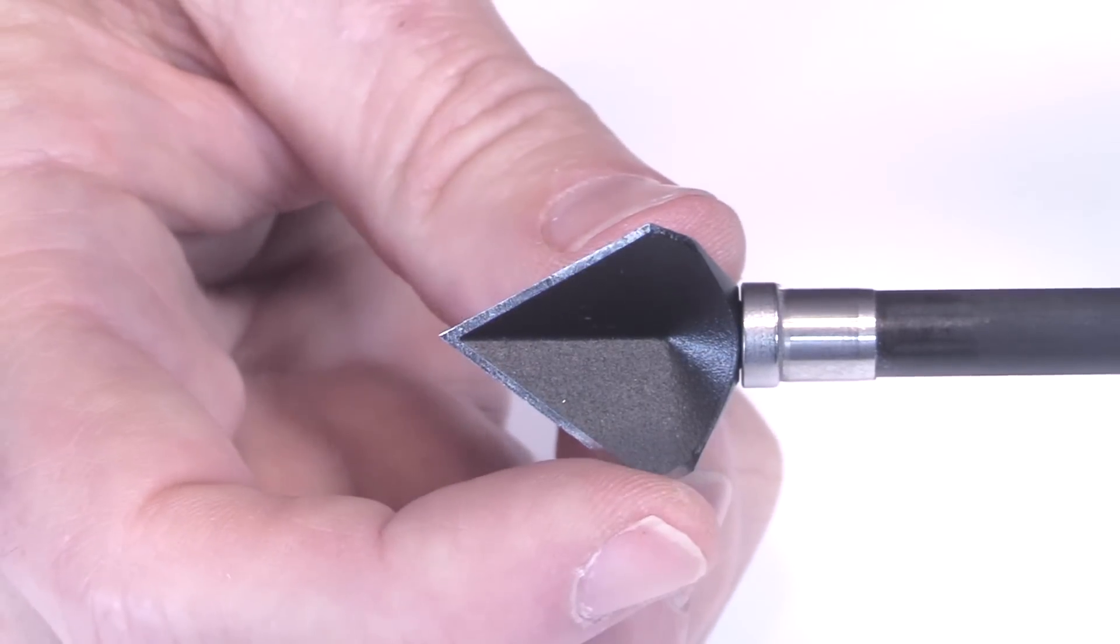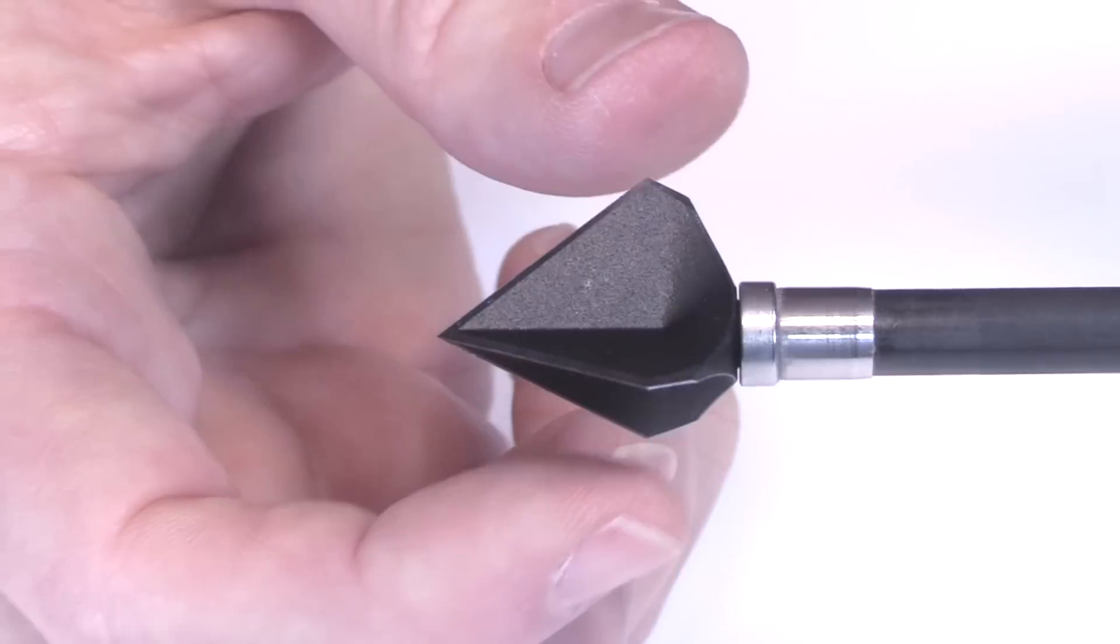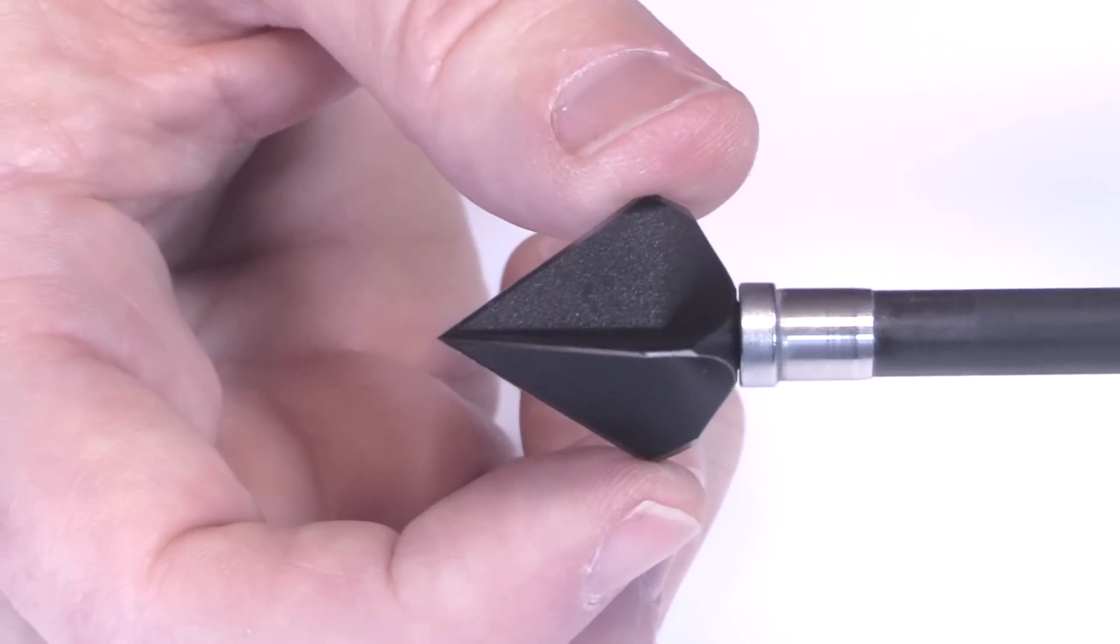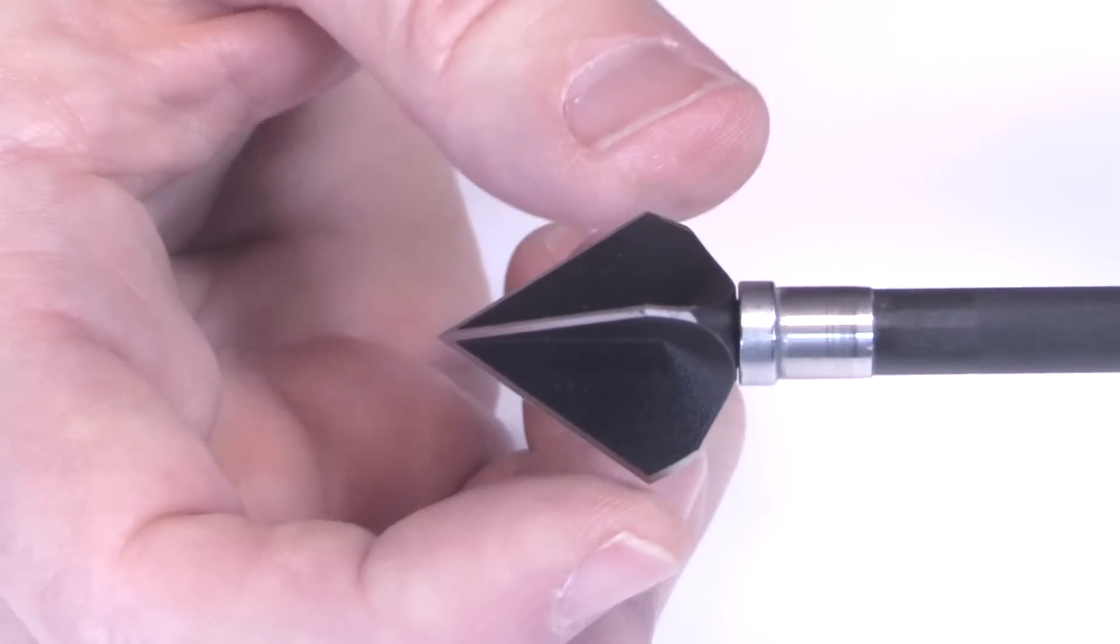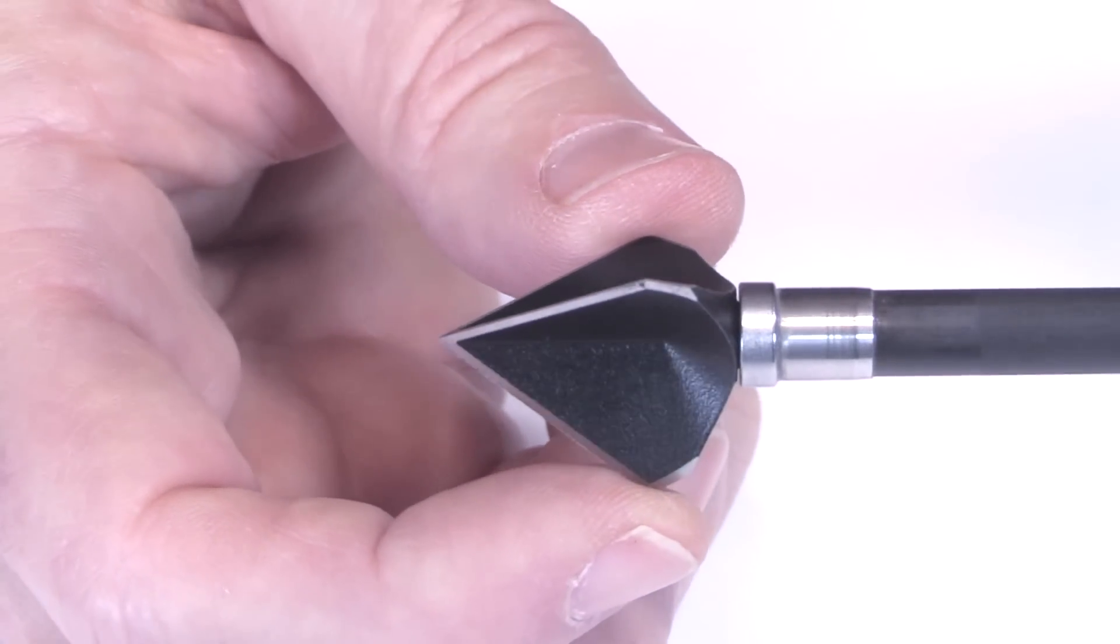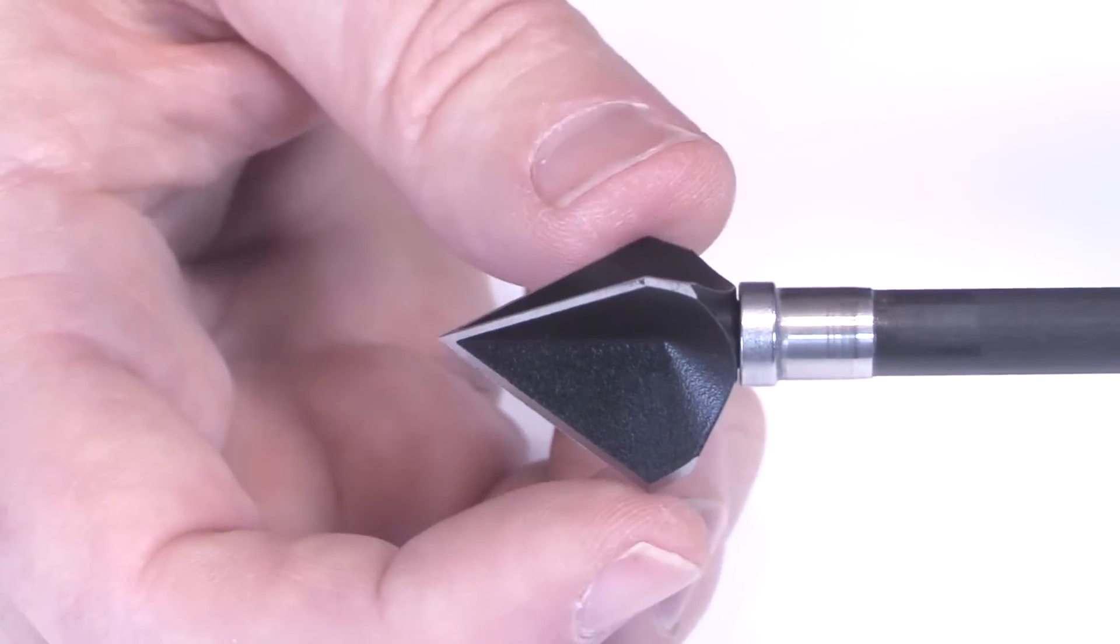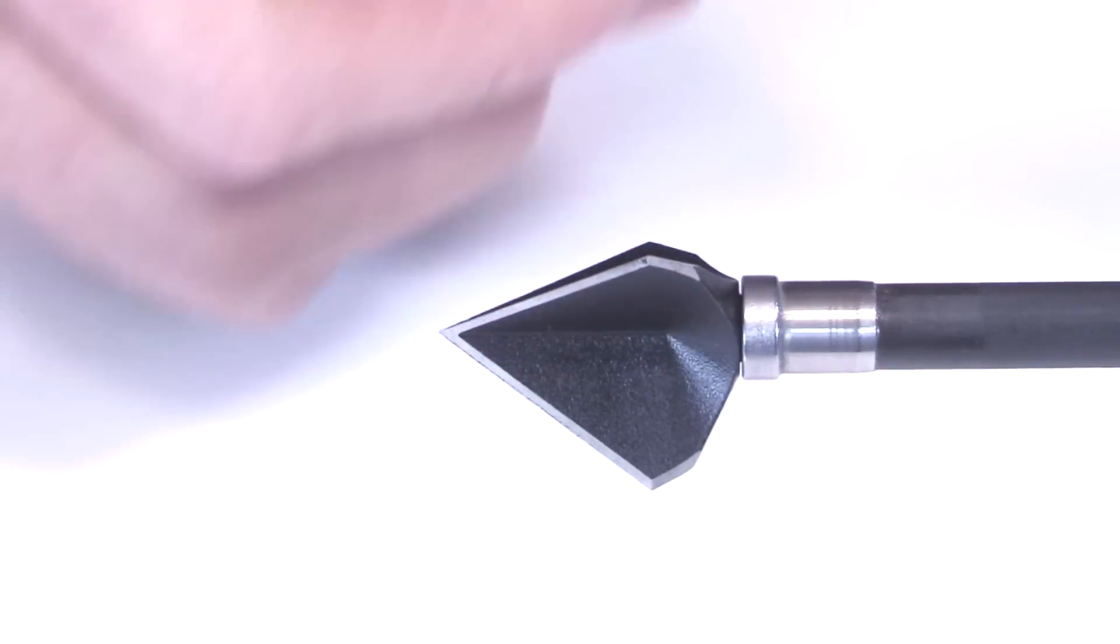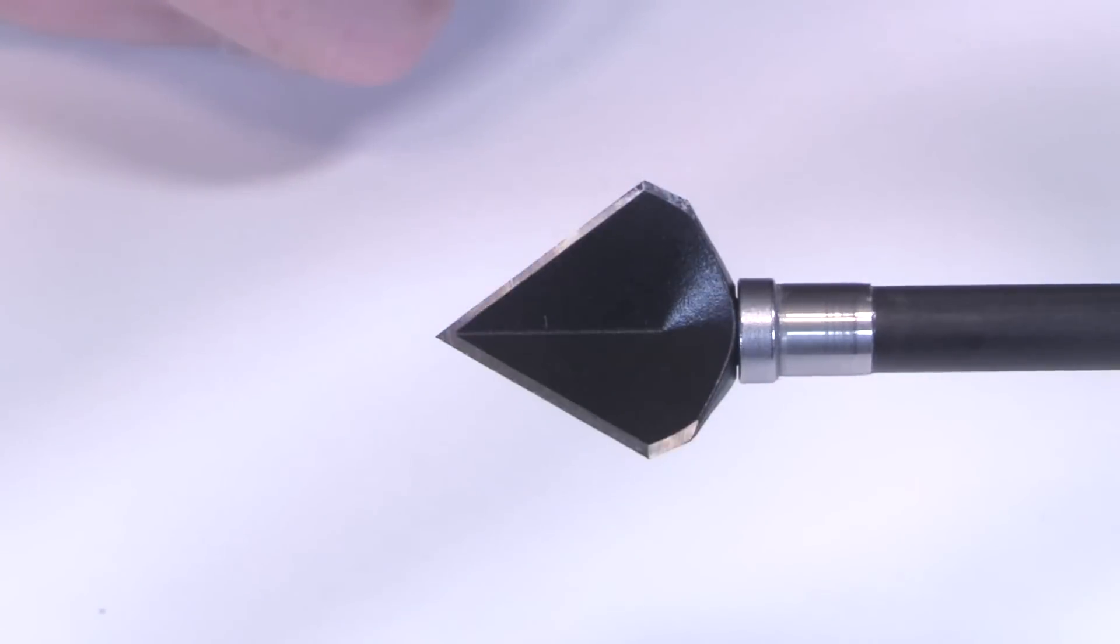Now, the cutting diameter on this is one and one sixteenth inches, whereas the original Annihilator was under one inch of cutting diameter. This is one and one sixteenth inch, so 1.06 inches of cutting diameter with three blades. That gives it a total cut of 1.59 inches.